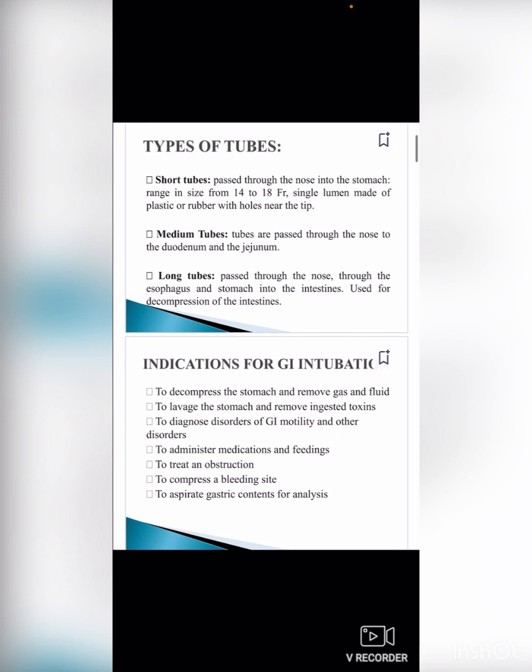Types of tubes: short tubes pass through the nose into the stomach, range in size from 14 to 18 French, single lumen, made of plastic or rubber with holes near the tip. Medium tubes are passed through the nose to the duodenum and jejunum. Long tubes pass through the nose, esophagus, and stomach into the intestines, used for decompression of the intestines.